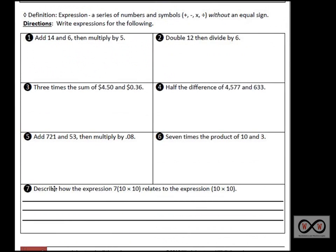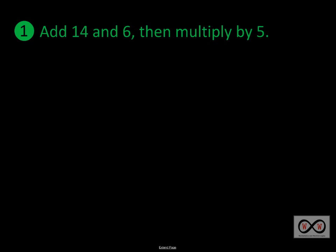We also have number 7, in which we have to describe how the expression 7 times 10 times 10 relates to the expression 10 times 10. Let's take a look at the first question. Number 1: add 14 and 6, then multiply by 5.